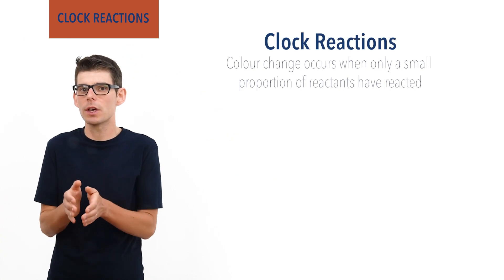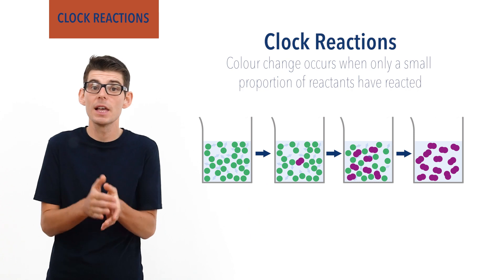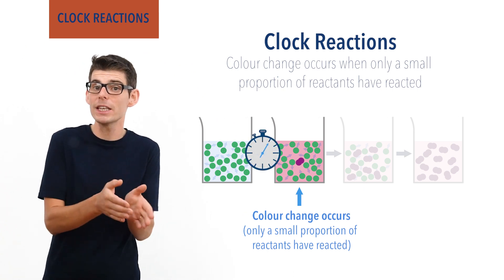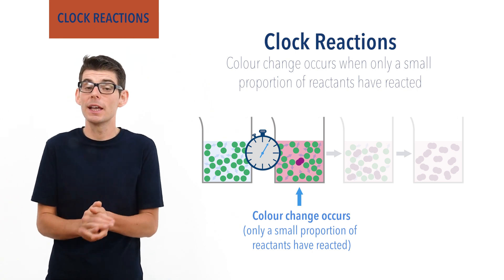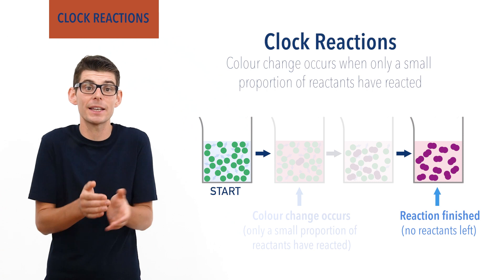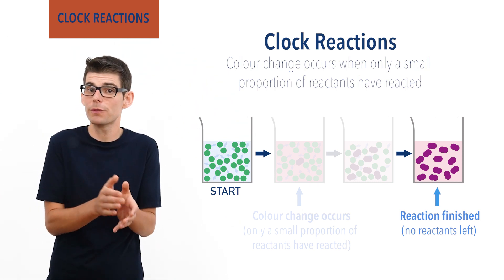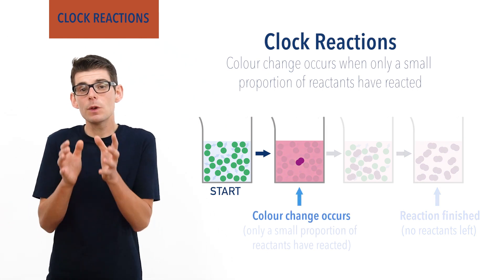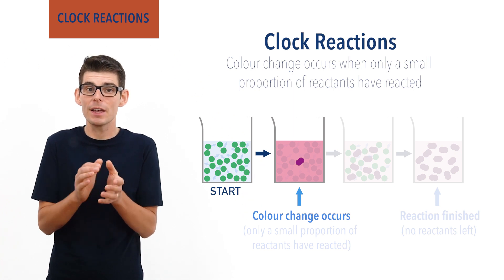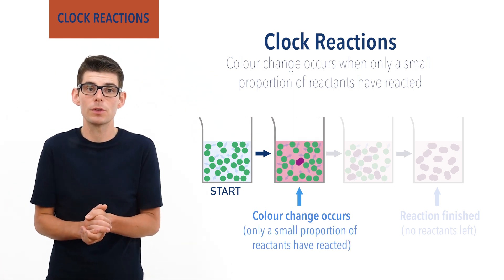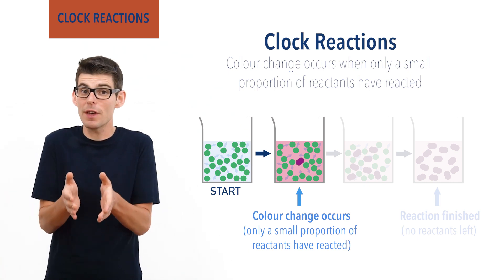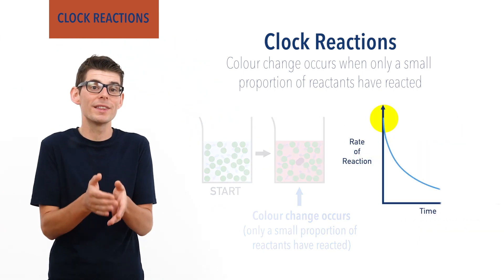In a clock reaction, a colour change occurs when only a small proportion of the starting reactants have reacted. If we time how long it takes for the colour change to occur, we can determine the starting or initial rate of the reaction. It's really important to note that in a clock reaction, the reaction hasn't finished when the colour change occurs and the reactants haven't all been used up. It's just that a certain amount of product has been formed that triggers the colour change. If we want to measure only the initial rate of a reaction, it's key that when the colour change occurs, the concentration of reactants has changed only a tiny bit compared to their starting concentrations, as this means the rate is minimally affected and the reaction is still happening at pretty much its initial rate when the colour change occurs.